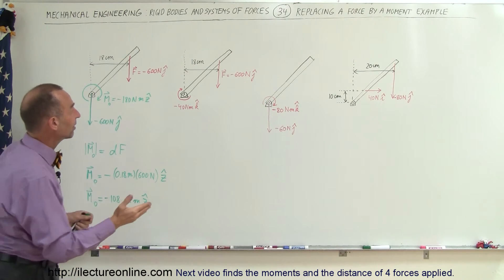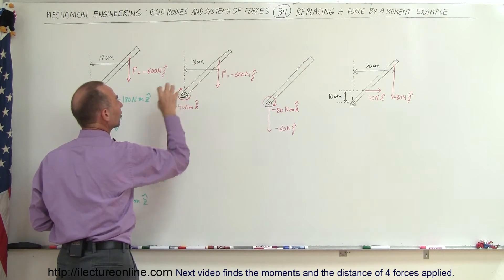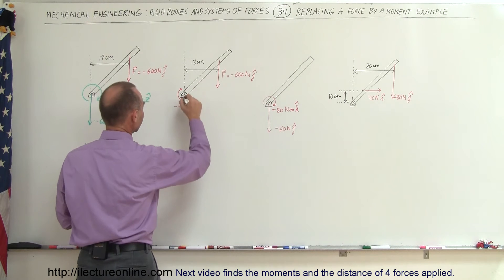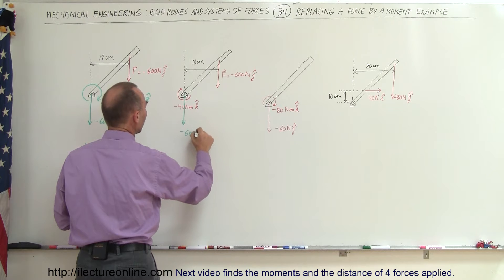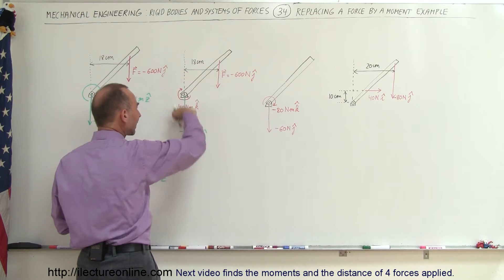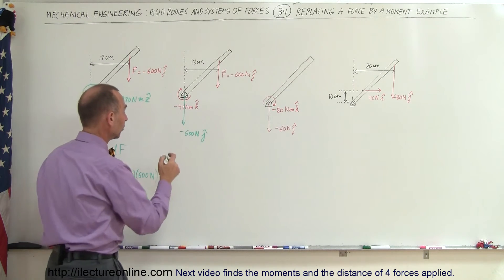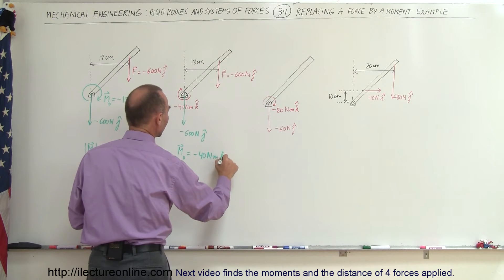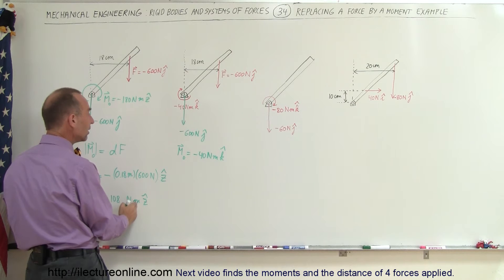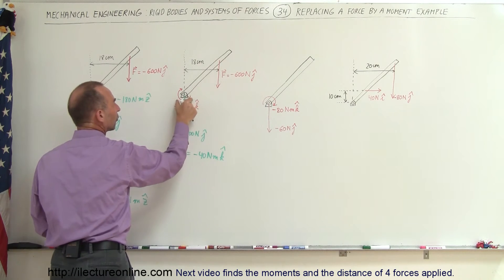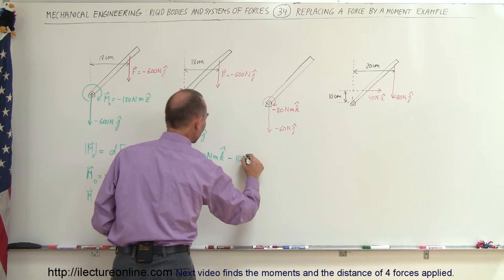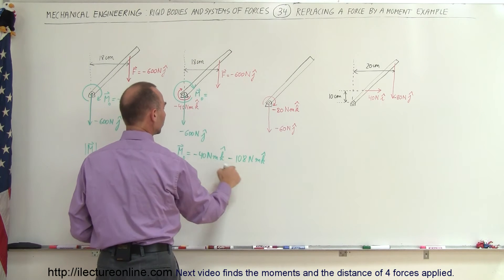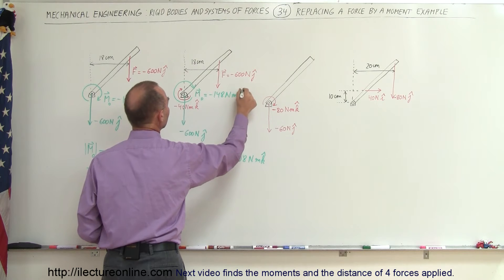In the second example, the force is the same but we already have an existing moment of minus 40 newton meters in the negative z direction. We move this force to the origin — it becomes minus 600 newtons in the negative y direction — and then compensate by adding moments. The new total moment equals minus 40 newton meters plus minus 108 newton meters in the z direction, giving a combined moment of minus 148 newton meters in the negative z direction.